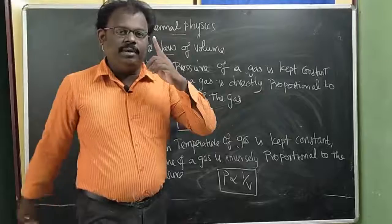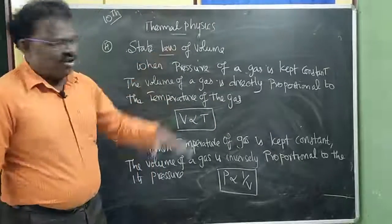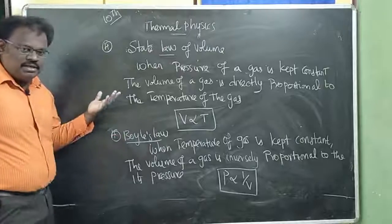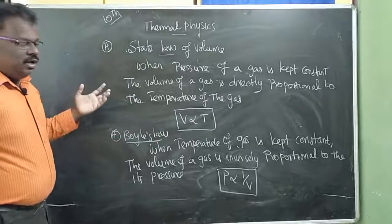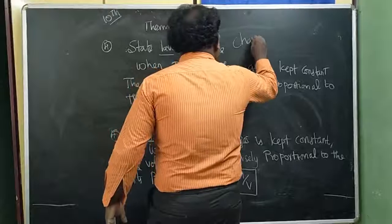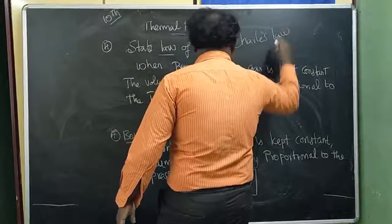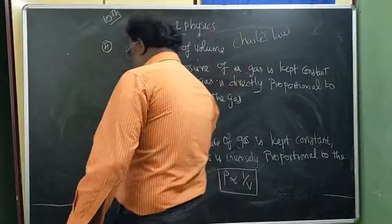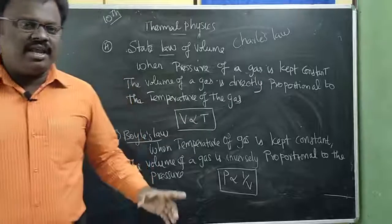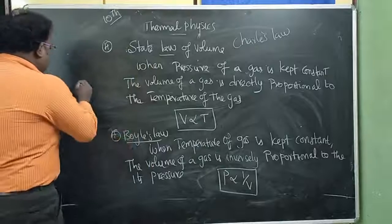Hello guys, if we go to a topic — straight law of falling. The fourth trademark. The law of falling is the name of Charles Law. So Charles Law of falling is the name of Charles Law. Why is this law of falling? Let's know how to do this law of falling.